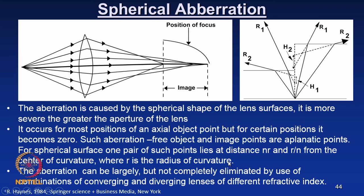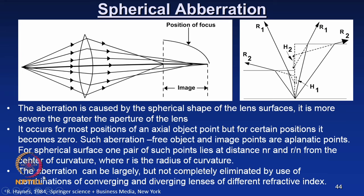As I mentioned yesterday, this parameter — aplanatic points — is used to fabricate high-power objective lenses. This aberration can be largely but not completely eliminated by use of combinations of converging and diverging lenses of different refractive index. We will see that in detail when we complete all the definitions of the defects and then see how it can be overcome by combinations of different lenses with different optical characteristics.